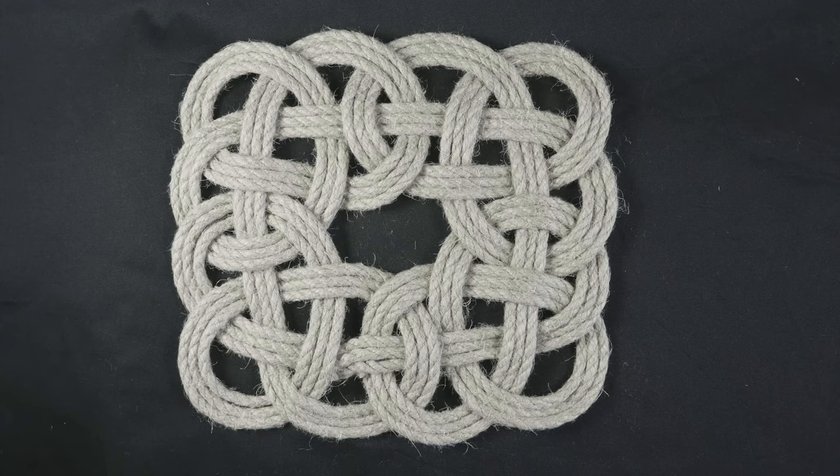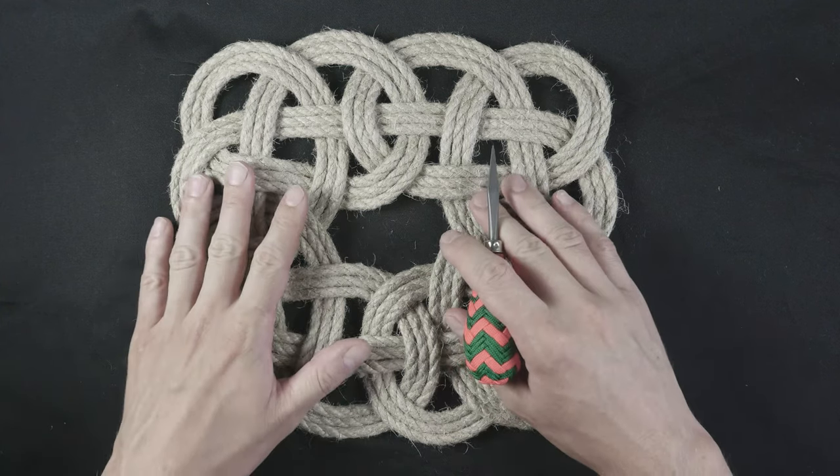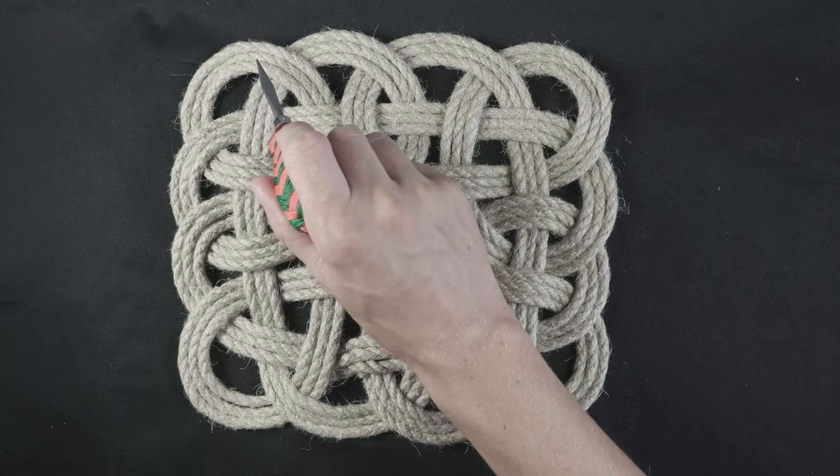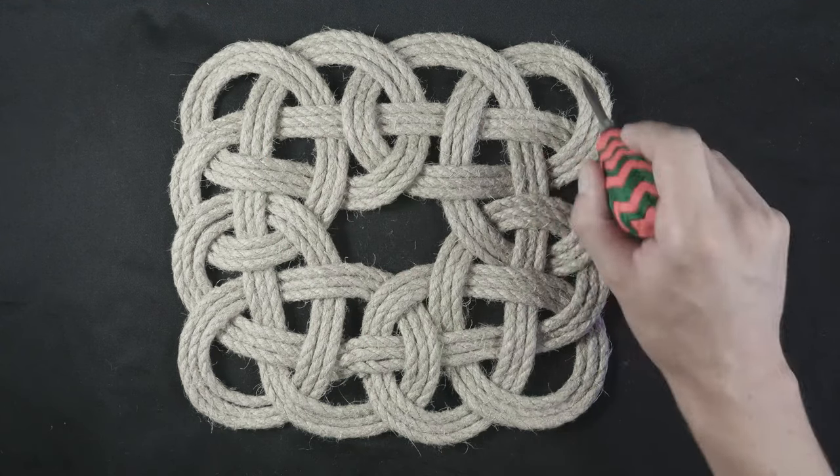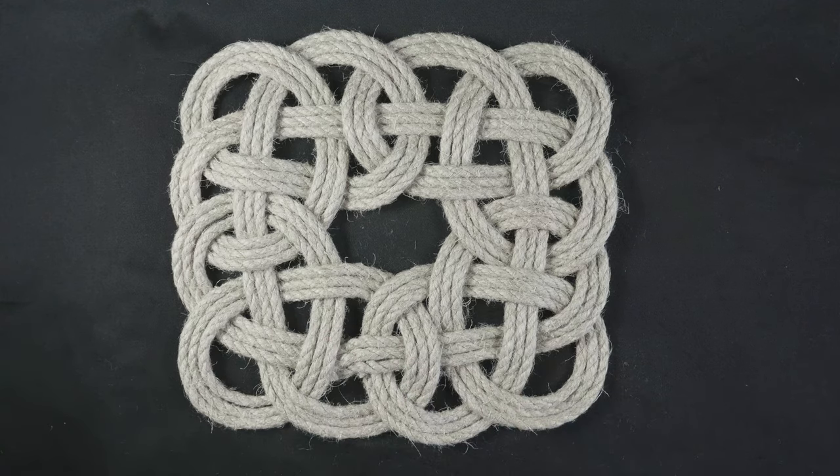Today we are going to be making a squared rope mat. So as you can see here, the mat has four bights on the top, the right, the bottom and the left.